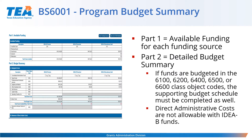The BS6001 schedule is the program budget summary. There are three fund sources on the federal application: IDEA-B Formula, IDEA-B Preschool, and IDEA-B Discretionary Def. Part 1 shows the available funding for each fund source and Part 2 is the detailed breakdown of how those funds will be used. CEIS funds are no longer documented in the budget summary — CEIS will only be documented in the BS6016 schedule. As you enter information in Part 2, those budgeted funds will auto-populate in the applicable supporting budget schedule. Direct administrative costs are not allowable with IDEA-B funds, which is why the breakdown of direct admin cost is hidden in the budget summary.